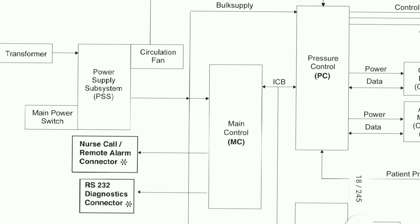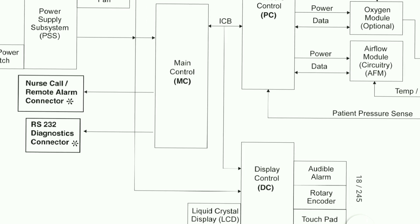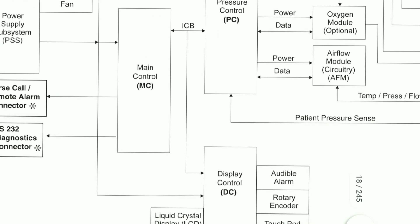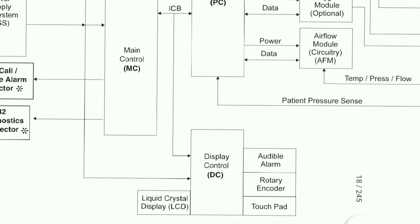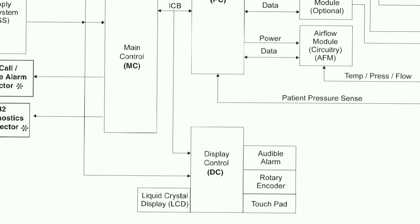From the main control there is the ICB which goes to the display control, where there is a liquid crystal display for displaying all the parameters needed for clinical purposes. There is also an audible alarm, rotary encoder, and touchpad. These switches are side by side with the screen, so the controls and inputs are taken from here and given to the main controller.